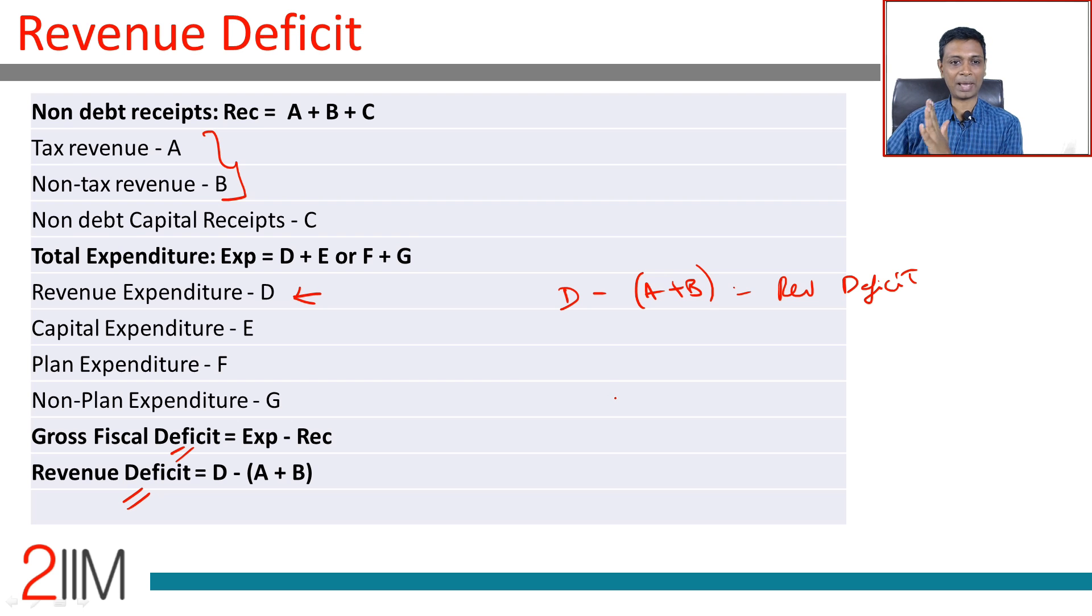Before we go into why that is more important, I am going to draw an entire parallel to a household. What is this as a proxy for the household? Tax revenue, non-tax revenue - think about it as income earned by people, by household members. Non-debt capital receipts: they sell some old assets. You have an old TV, you sell that, that is non-debt capital receipts.